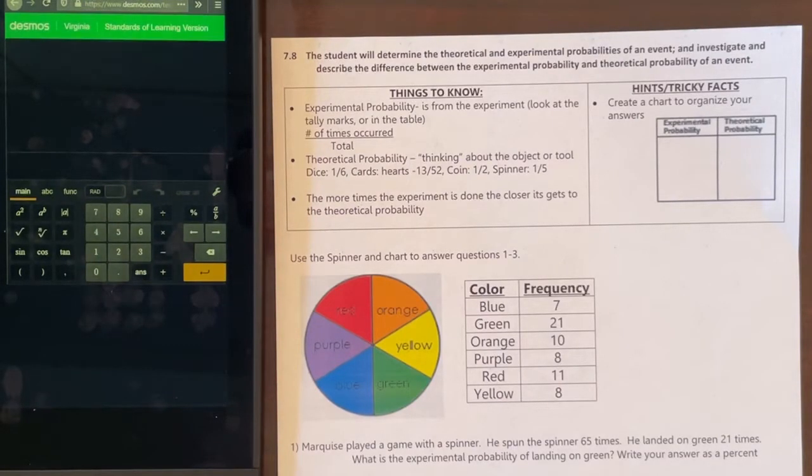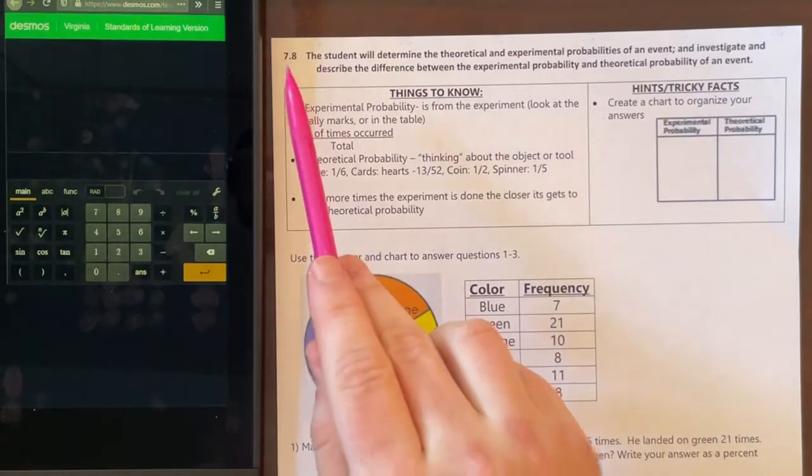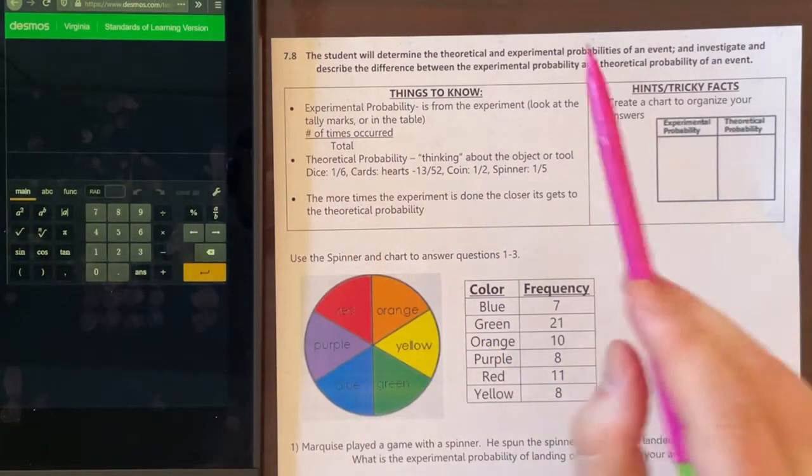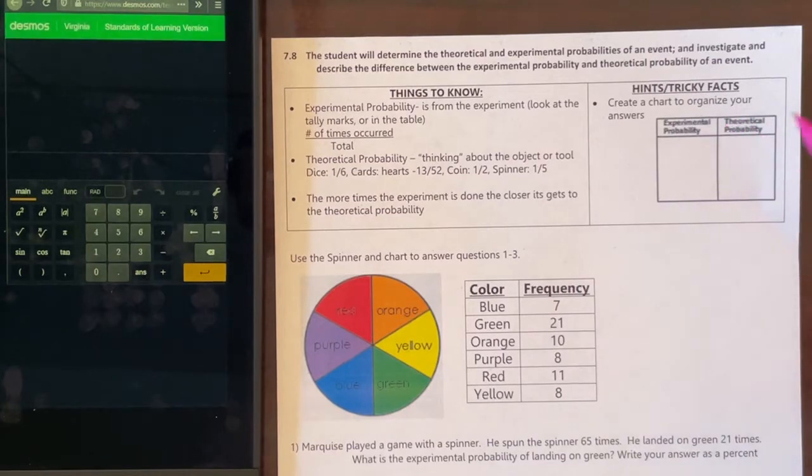Alright, welcome back boys and girls. It's your main math man, Mr. Jank, coming to you live from Walker Grant Middle School. And in this video, we're still working on that SOL review guide. Now we're working on that 7.8, which is going to be that probability.